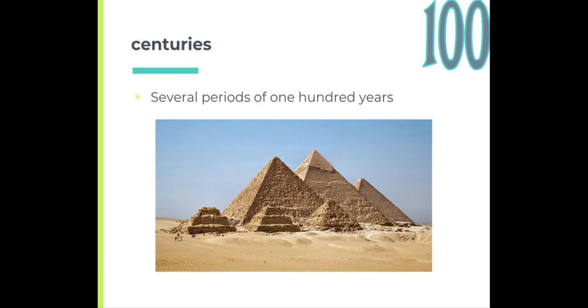Centuries. This is several periods of 100 years. So I can say several centuries ago the ancient Egyptians were a civilization in northern Africa. When I say centuries it means several periods of 100 years.